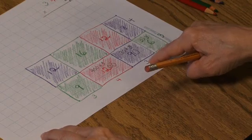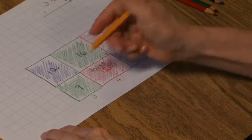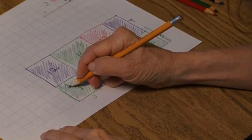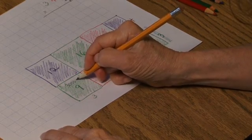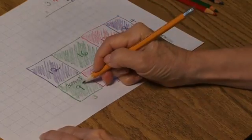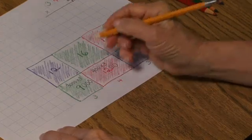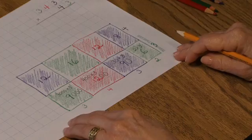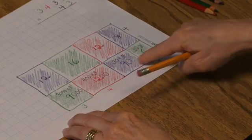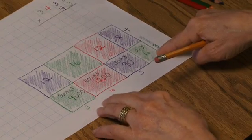This area represents 3,000 taken 3 times. And the 9 stands for 9 thousands. So now I have the actual value of each of these parts of that product.